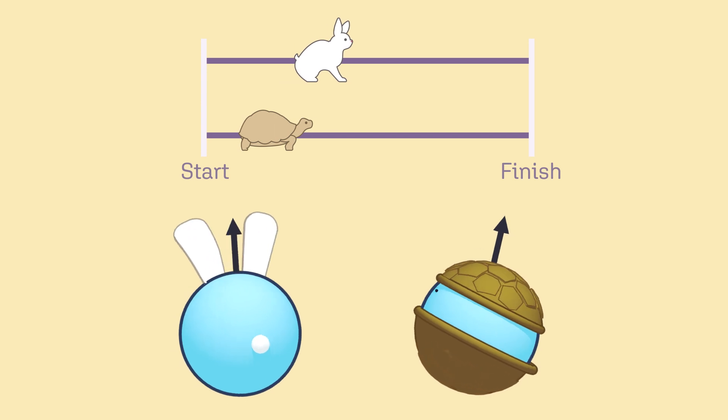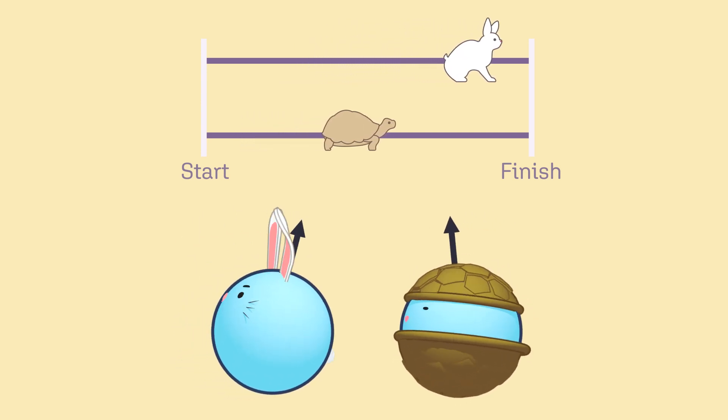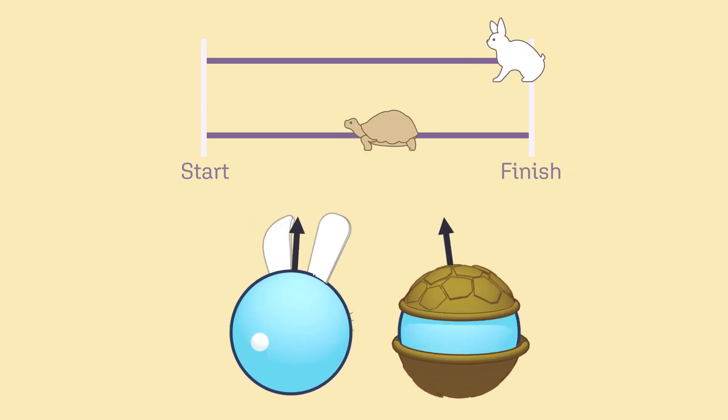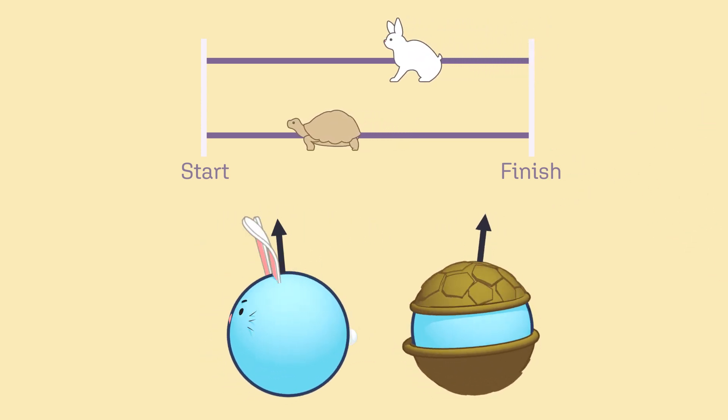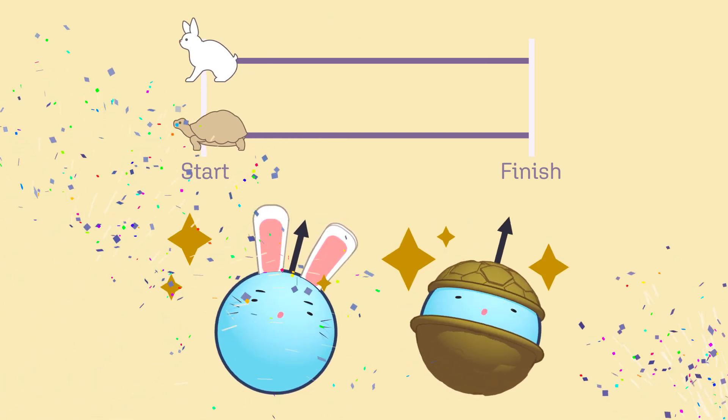Much like the classic tale of the tortoise and the hare, though the tortoise is far behind the rabbit, if we ask both to turn around and head back to the starting line of the race, they'll catch up to each other and arrive at the same time due to the differences in their speeds. The crowd goes wild. It's a tie!